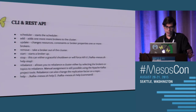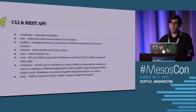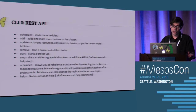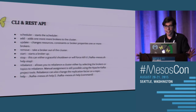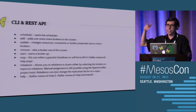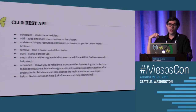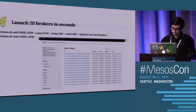Here's the functionality around the REST API. Once the scheduler is started, you can add brokers, update them, update resources and configurations, remove brokers from the cluster, start and stop brokers. If you want to reconfigure something, you can stop it, update it, and start it all through the command line - very simple, no Chef, no Puppet. We also built in rebalancing, and there's a new feature for adding topics. You can launch 20 brokers in a couple of seconds - it's really awesome.